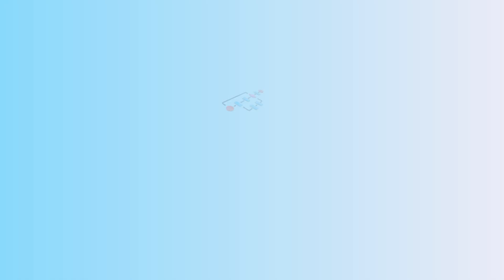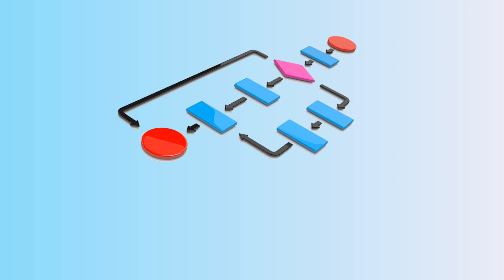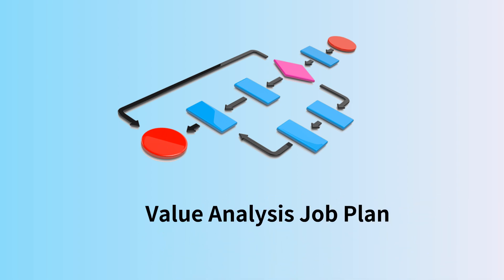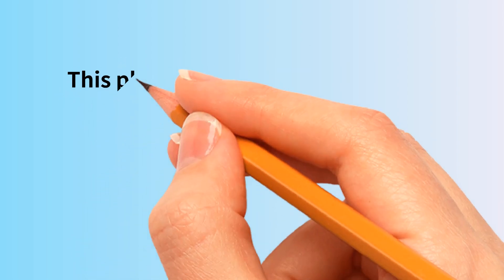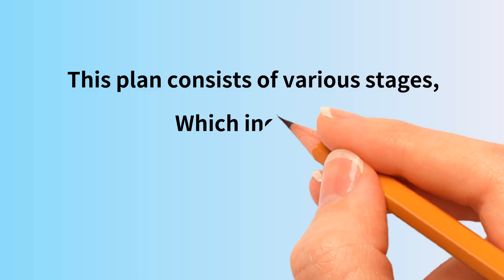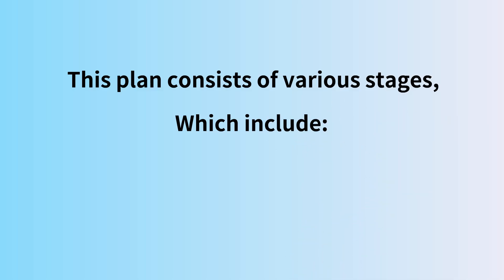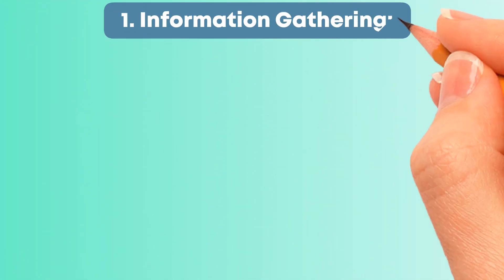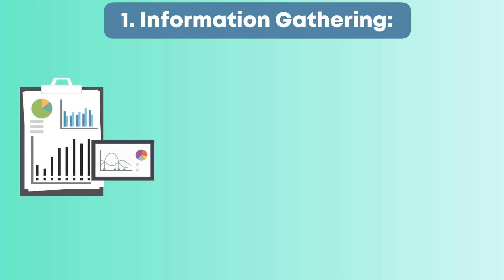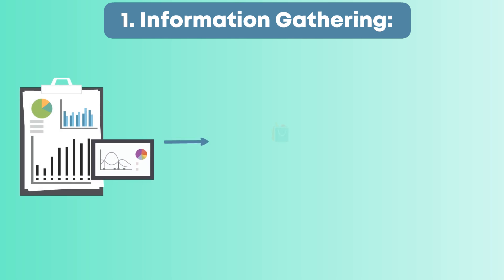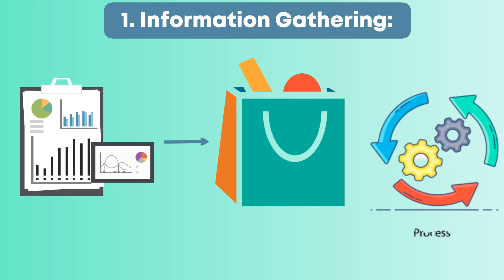Value analysis typically follows a structured process, often referred to as the Value Analysis Job Plan. This plan consists of various stages, which include: Number 1, Information Gathering — gathering data and relevant information about the product or process under analysis.